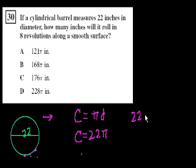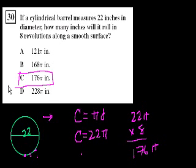So what's the circumference of this? Circumference is equal to pi times the diameter. The diameter they already gave us was 22, so the circumference is equal to 22 pi. So 22 pi times 8 is 176 pi. And that's choice C. See you in the next video.